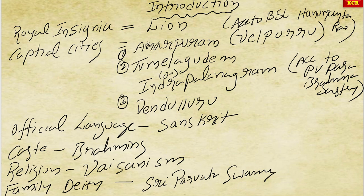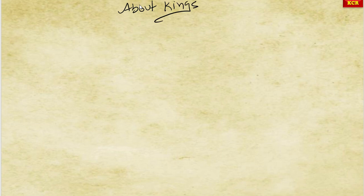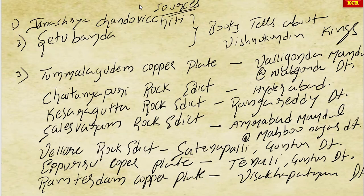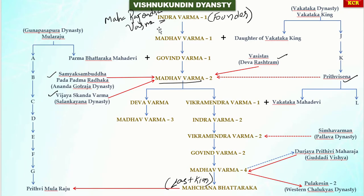Now we will discuss about each king of the Vishnu Kundin dynasty. The first king was Indra Verma One, the founder of the dynasty. We will now discuss about this person in detail.